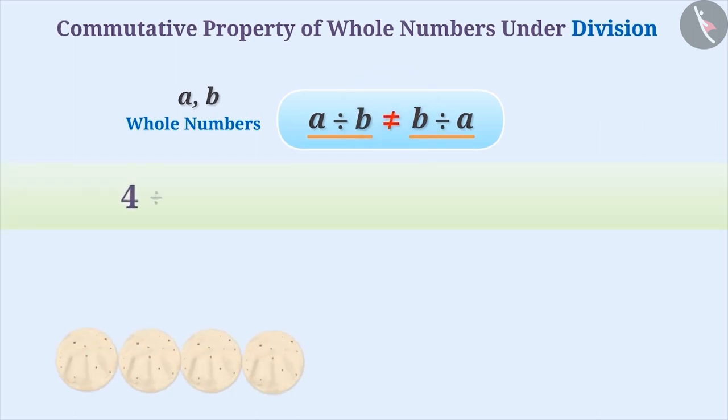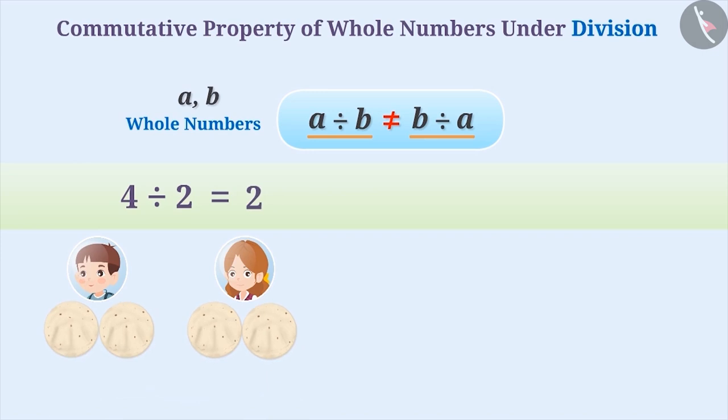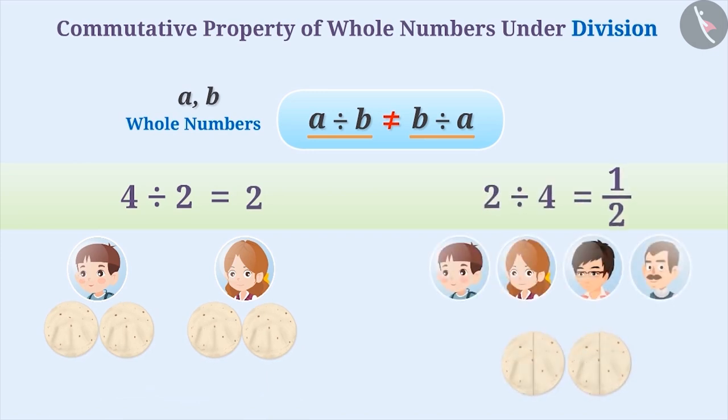Coming to division operation. The division of any two whole numbers a and b cannot be done by changing the order, because a divided by b is not equal to b divided by a. For example, four divided by two equals two. However, two divided by four equals half. Therefore, four divided by two cannot be written as two divided by four by changing the order. Therefore, division of whole numbers is not commutative.